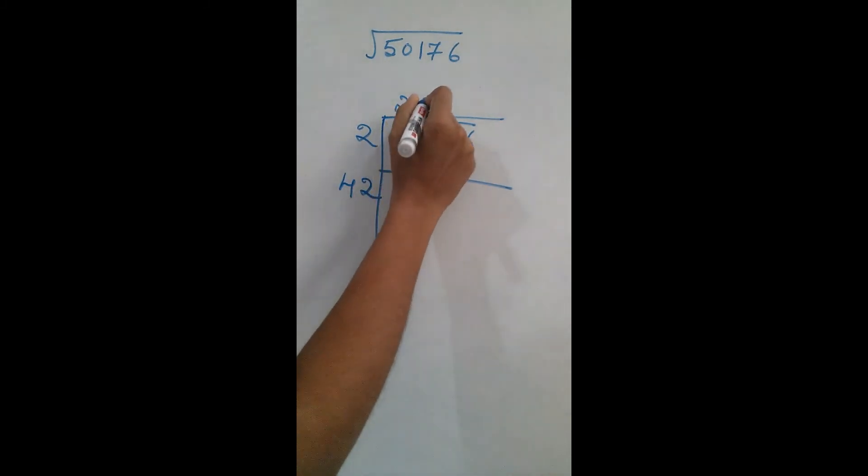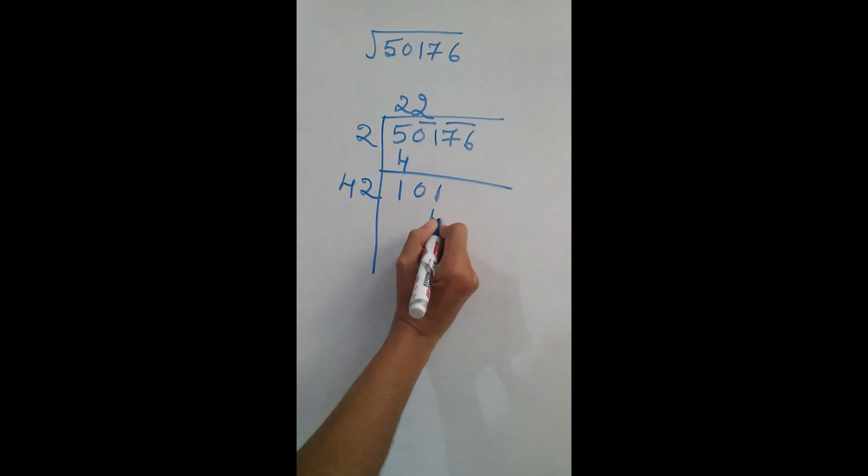2 plus 2 is 4. This one, 42 into 2. 2 times 4 is 8, 84. I am subtracting this. I am getting 17. I am bringing this 76, this group down.